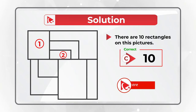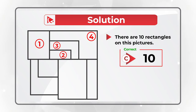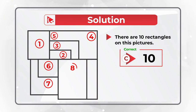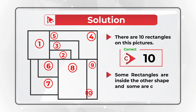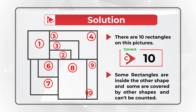Let me show them all to you: 1, 2, 3, 4, 5, 6, 7, 8, 9, and 10. The tricky part to solve this question was the fact that some rectangles are inside of the other shape and some are covered by other shapes and cannot be counted.